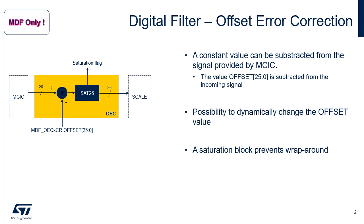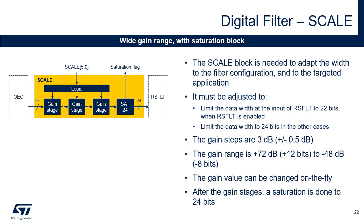The offset error correction block can be used to cancel a DC component value from the signal provided by MCIC. The value offset is subtracted from the incoming signal. The application can change this offset value dynamically if needed. In addition, the saturation block prevents wraparound issues. A saturation flag is set in case of saturation to inform the application. The scale block is needed in order to adapt the width of the filter configuration to the targeted application. When the reshape filter is used, the signal at the output of the scale block must not exceed 22 bits. If the reshape filter is bypassed, then the signal at the output of the scale block can be up to 24 bits. The gain steps are 3 decibels plus or minus 0.5 decibel. The gain range is between plus 72 decibel and minus 48 decibel. The gain value can be changed on the fly. A saturation is done at the output of the scale block to limit the signal width to 24 bits.